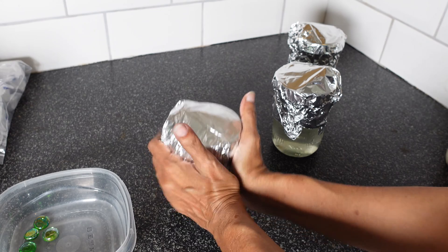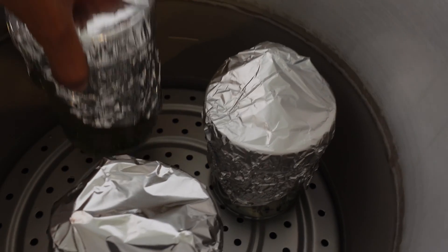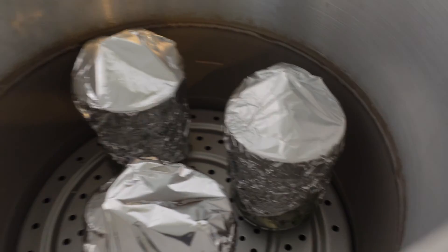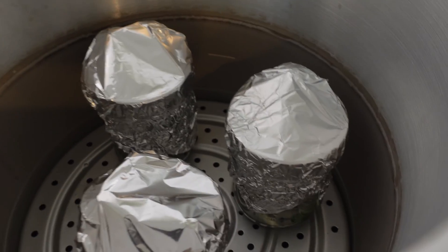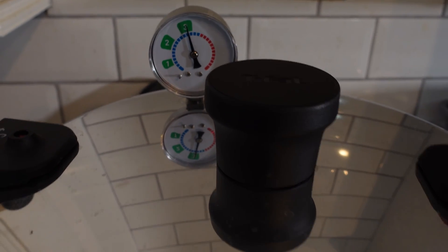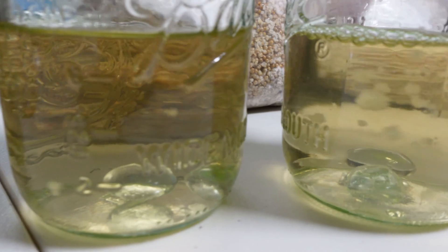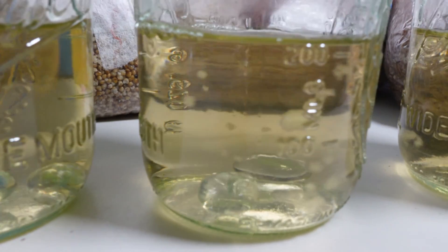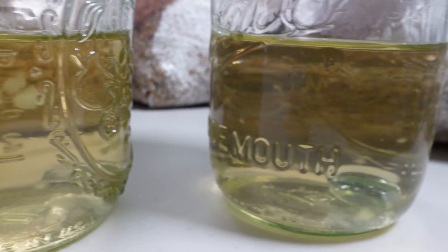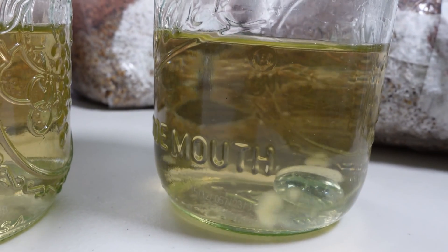The jars were covered with foil then placed into the pressure cooker for 30 minutes at 15 psi. The solution was cooled overnight before using it to make my spore culture. Be sure to stay tuned to see how this was done.